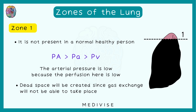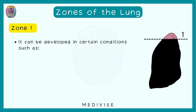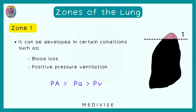Zone 1 can be seen in conditions like blood loss and positive pressure ventilation. In blood loss, arterial pressure drops, making alveolar pressure comparatively higher, which crushes the vessels and creates zone 1. In positive pressure ventilation, alveolar pressure is raised above normal, again crushing the vessels and leading to zone 1 formation.